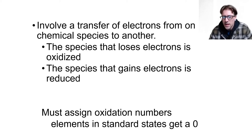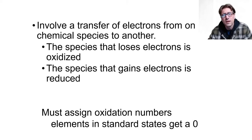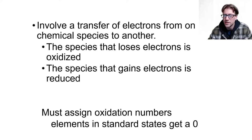We must be able to assign oxidation numbers to do this appropriately. The biggest trick is that elements in their standard states get a zero. Then we go from there — things are more likely to get their standard ionic charge based on electronegativity. Let's take a look and see whether we can recognize this movement in an equation.